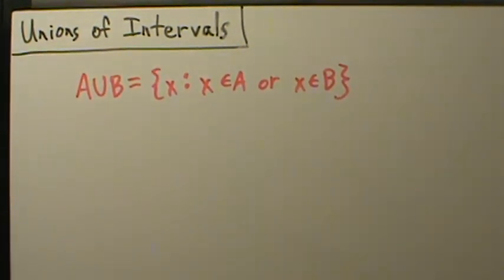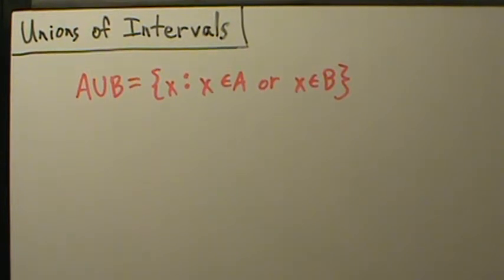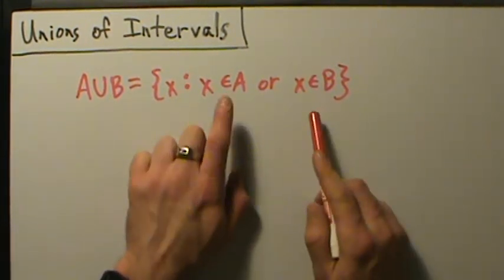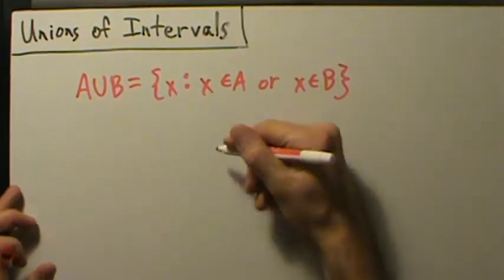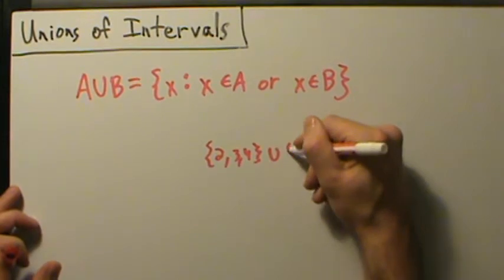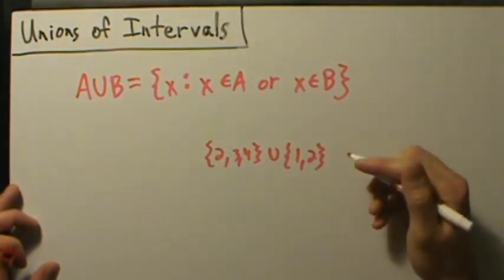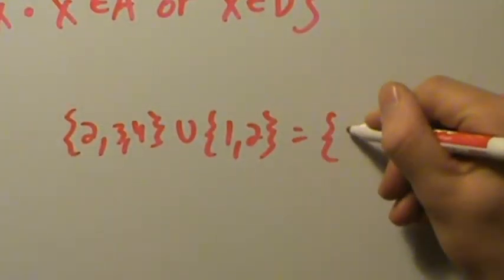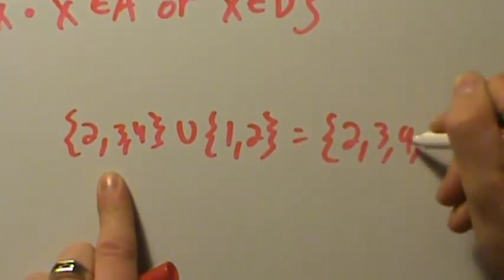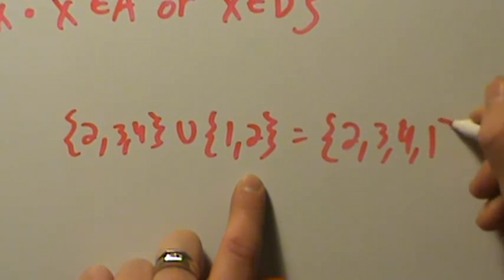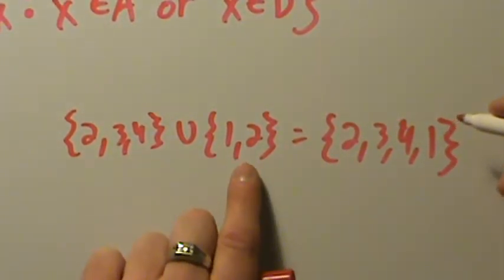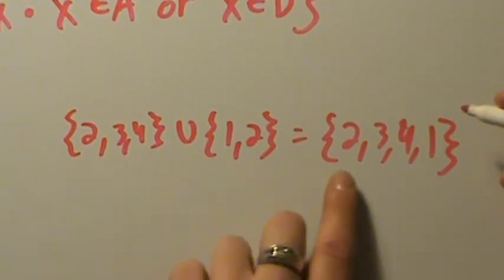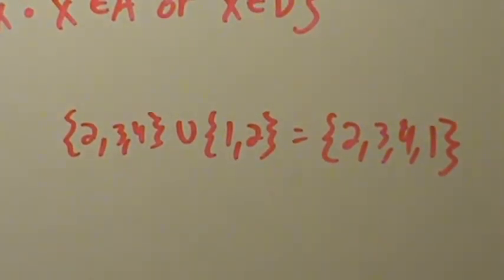It's the exact same thing with intervals since an interval is just a special type of set. When we find a union of intervals there might be some simplification involved, because if something appears in both sets you only write it once. For example, {2,3,4} union {1,2} — everything in the first set and everything in the second, but since 2 already appeared we only write it once.